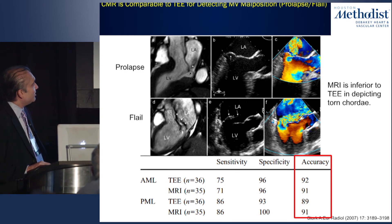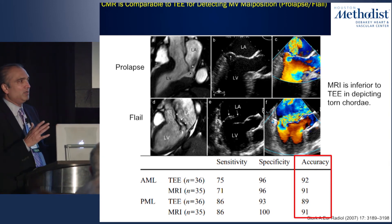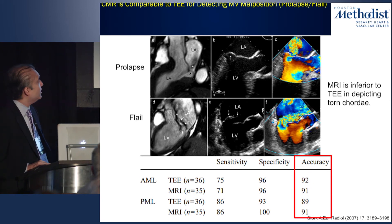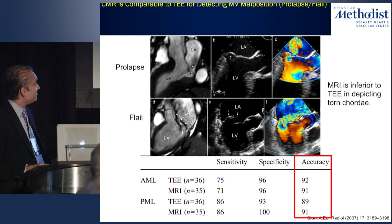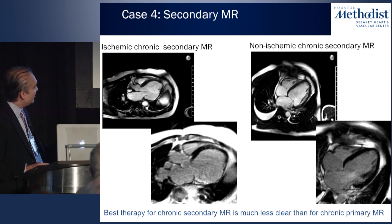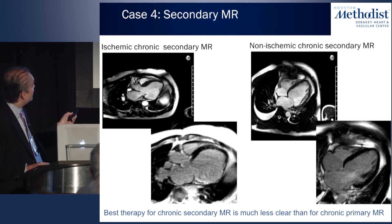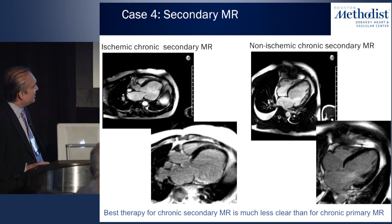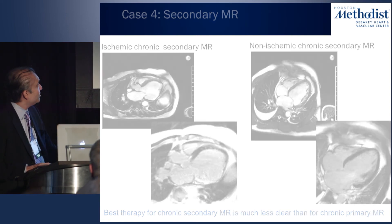TEE outperformed CMR in depicting torn chordae, because the small, very mobile structures are challenging to image with CMR across multiple cardiac cycles. CMR also evaluates the ventricle in secondary MR: delayed gadolinium enhancement can reveal infarction in the inferolateral wall with posterior leaflet tethering causing MR, or identify a dilated annulus from non-ischemic cardiomyopathy without LGE causing functional MR.